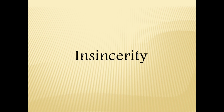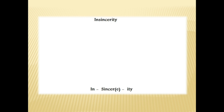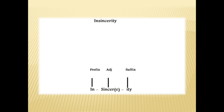For example, 'insincerity' is made up of three different morphemes. We have the prefix 'in-', we have 'sincere' which is the root and which is an adjective, and then we have '-ity' which is a suffix. We have to label each morpheme: 'in' is a prefix, 'sincere' is an adjective, and '-ity' is a suffix.